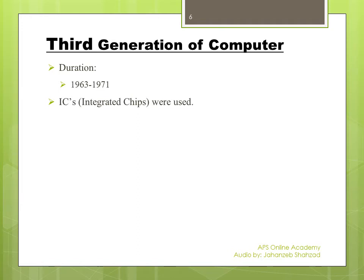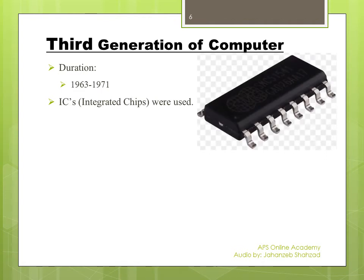In the third generation, IC chips were developed and used instead of transistors. Single IC chips increased the speed and decreased the size of computers compared to the second and first generations. Monitor and keyboard were used in these computers — the monitor as an output device and the keyboard as an input device.